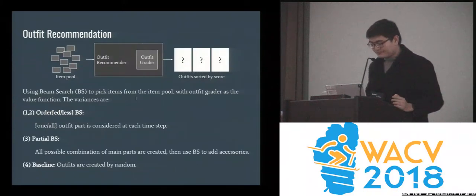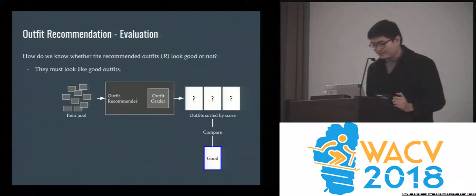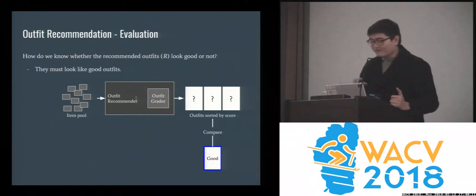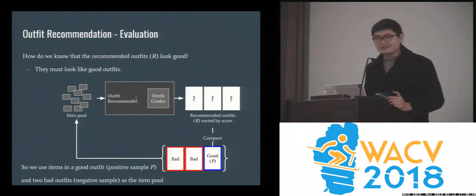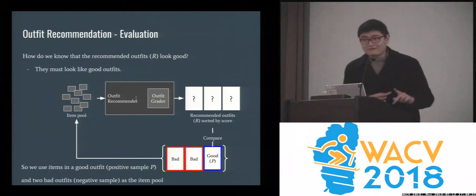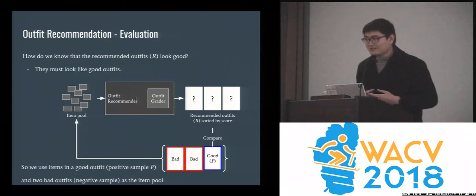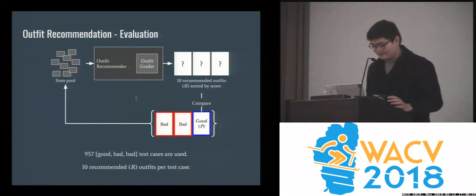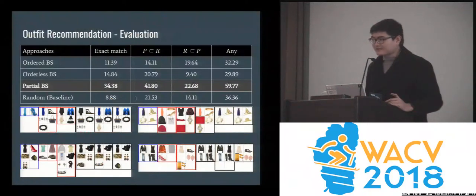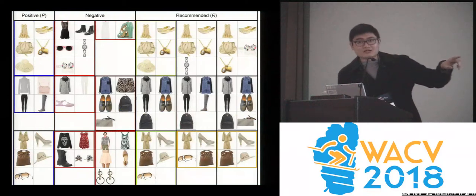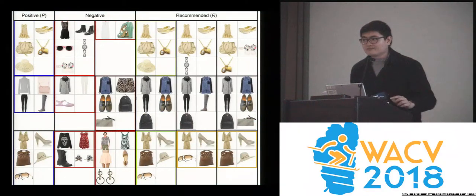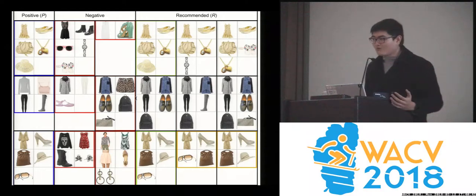For outfit recommendation, we use a variation of beam search to create outfits from an item pool. To evaluate, we set up test cases each containing one good outfit and two bad outfits, scramble the items together, and try to recover the good one. The result is that we match about 60% of test cases. We can see positive, negative, and recommended outfits for each test case — we have nearly 1,000 test cases in total.